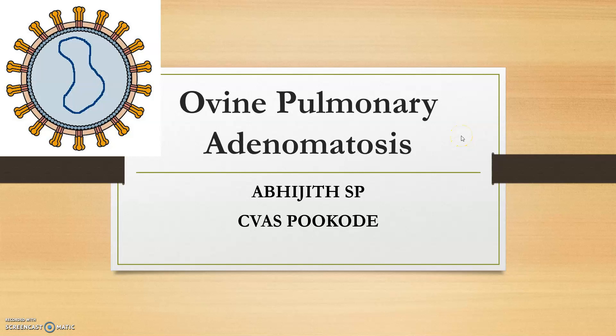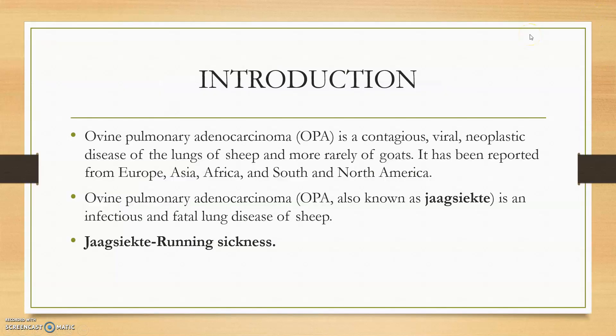Hi guys, welcome back to the Juvay channel. Today we are discussing the second sheep retrovirus disease, that is ovine pulmonary adenomatosis or ovine pulmonary adenocarcinoma. It is the carcinoma disease — the cancer — specifically a glandular cancer which is a contagious viral neoplastic disease of the lungs of the sheep.